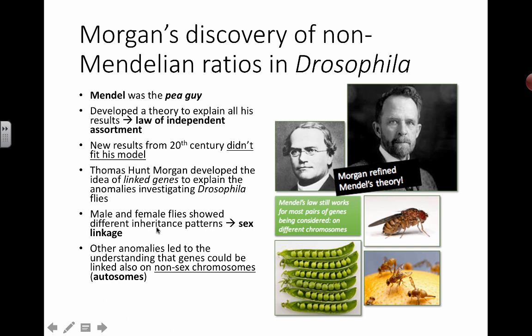Besides genes linked to the sex chromosomes, we also found that for Mendel's law of independent assortment to work, the two traits being studied have to be on different chromosomes. When they are, the predictable ratios usually work out. But when the ratios don't work out, the explanation proposed was that those two genes are located on the same chromosome, and genes on the same chromosome tend to be inherited together — unless crossing over between homologous chromosomes separates them.